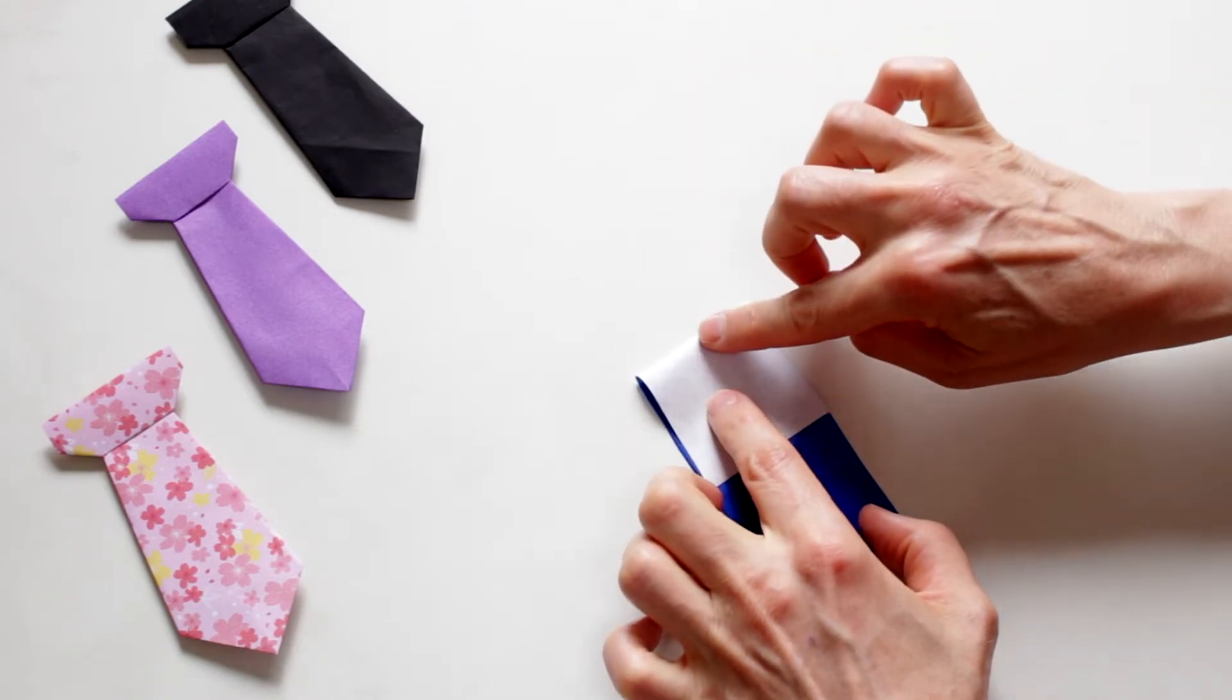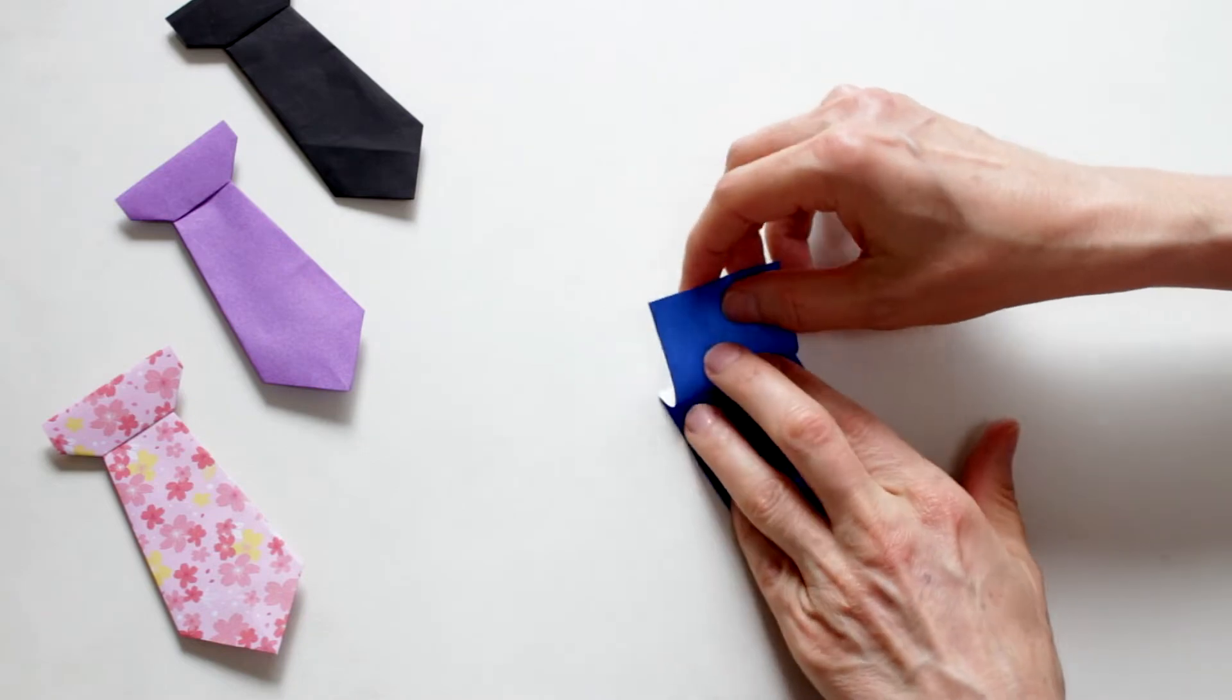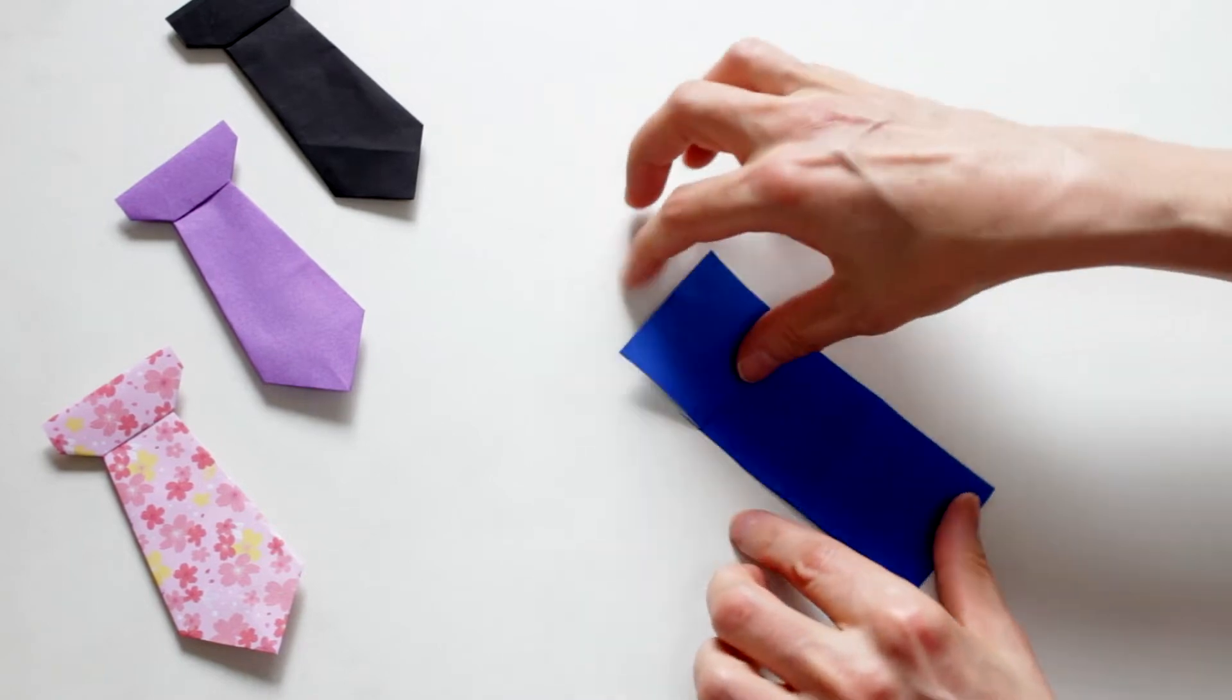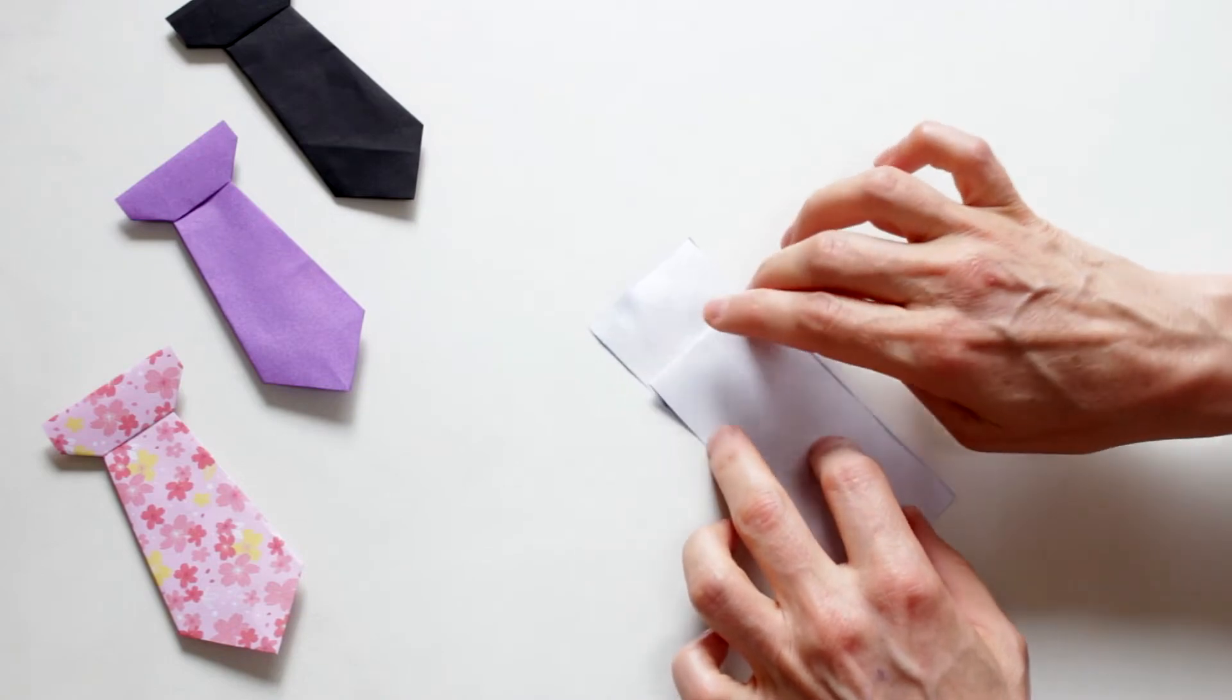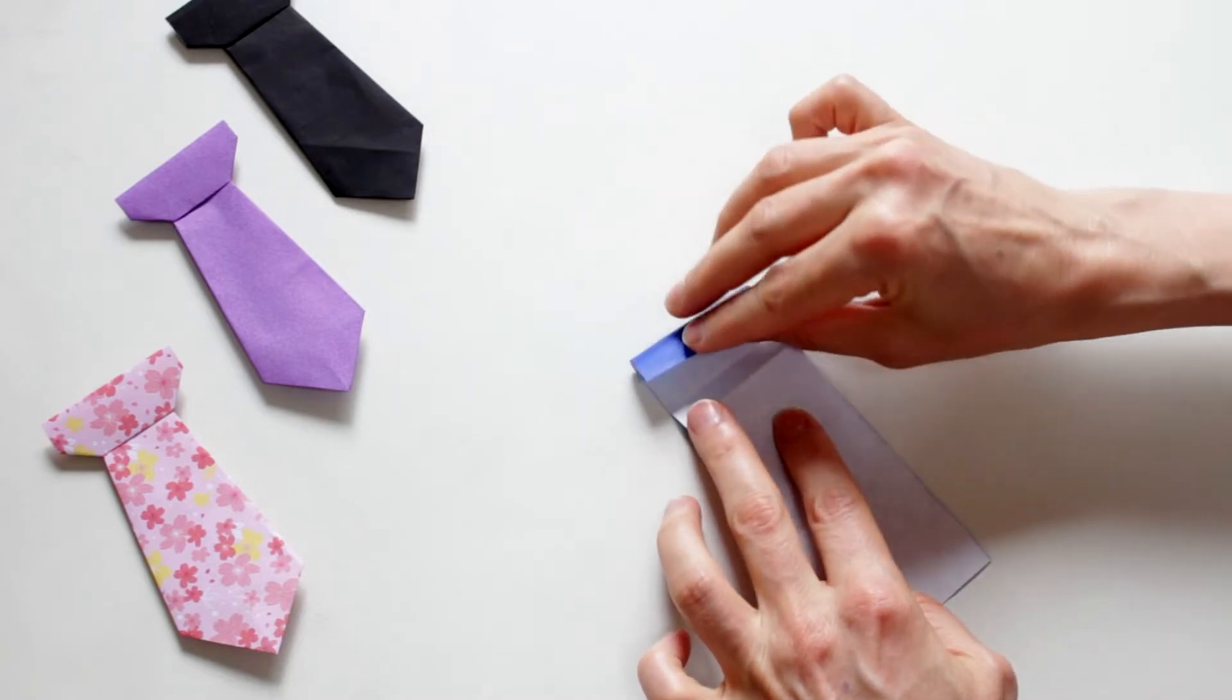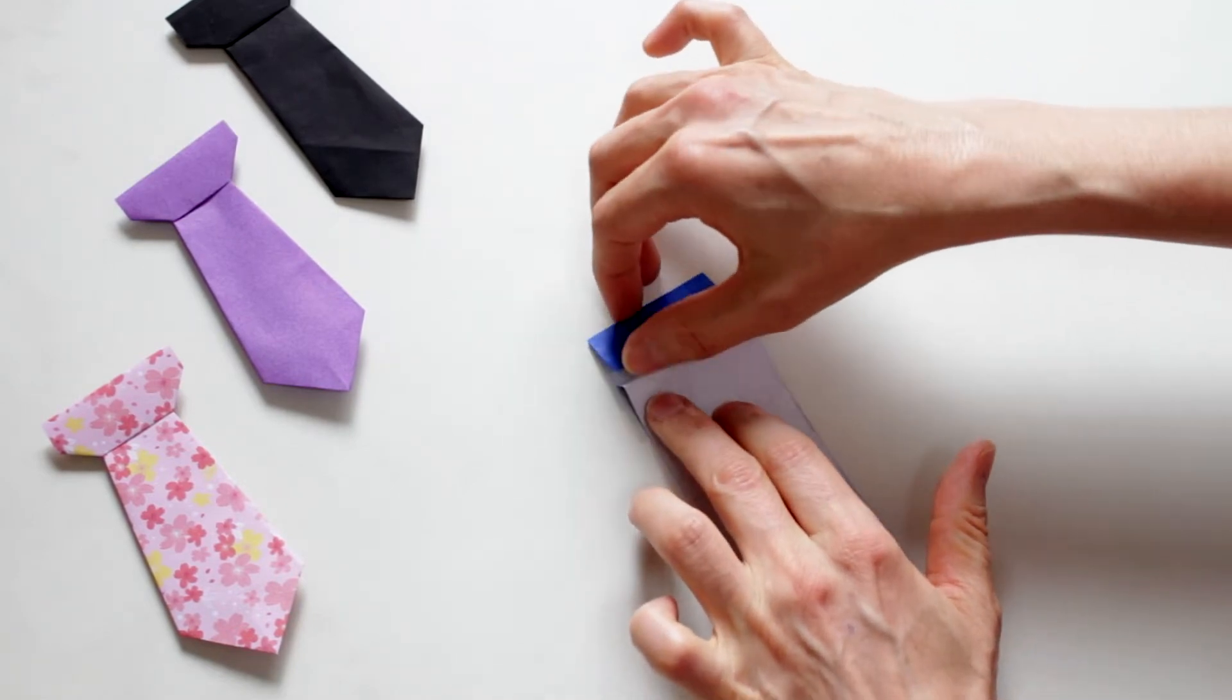Fold one third from the top and now we're gonna do a pleat fold here. It looks like this. And we turn it white side up again and we're gonna bring this edge to this crease. And then we fold the pleat back.